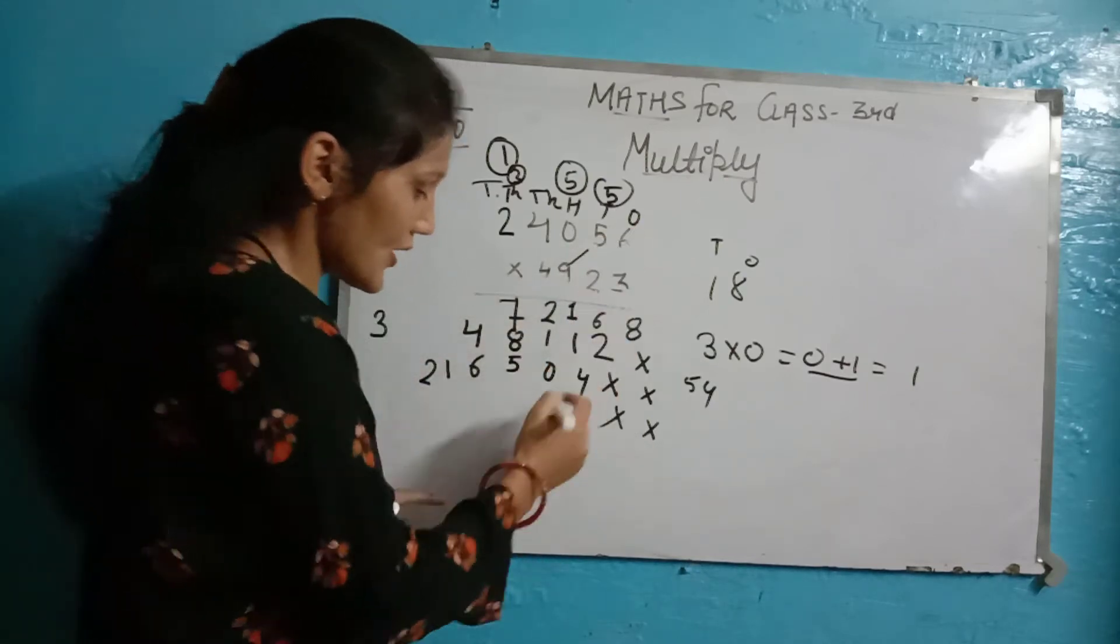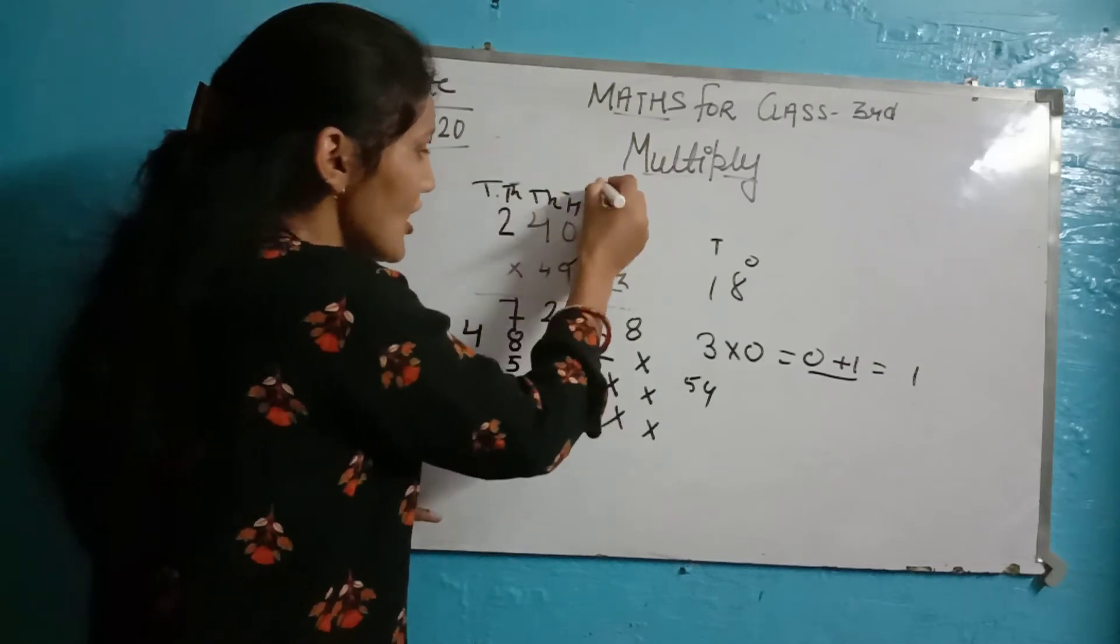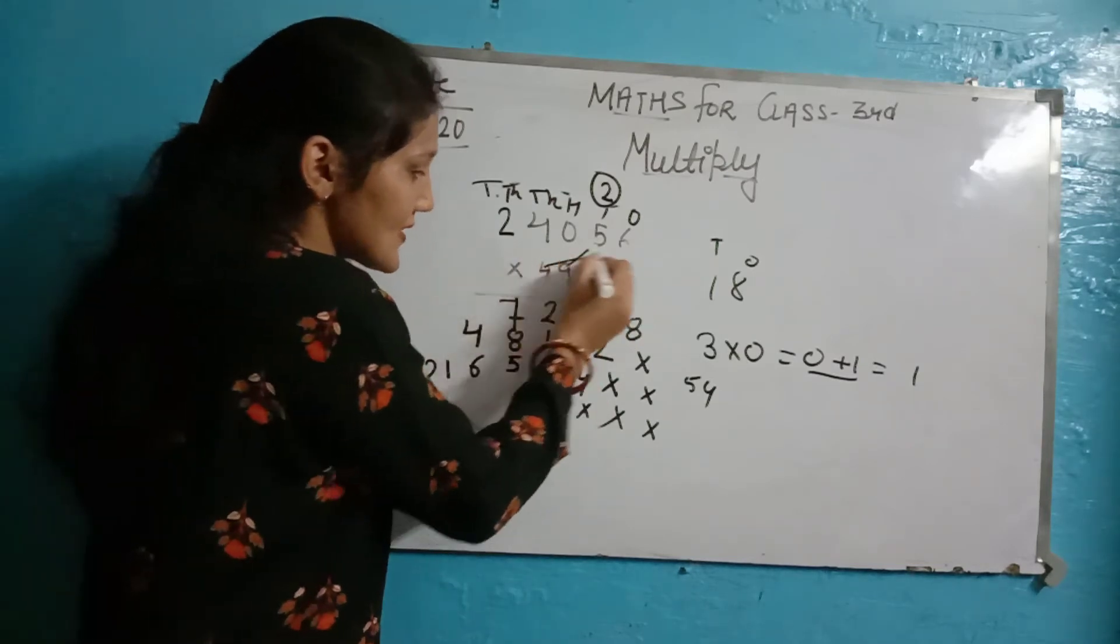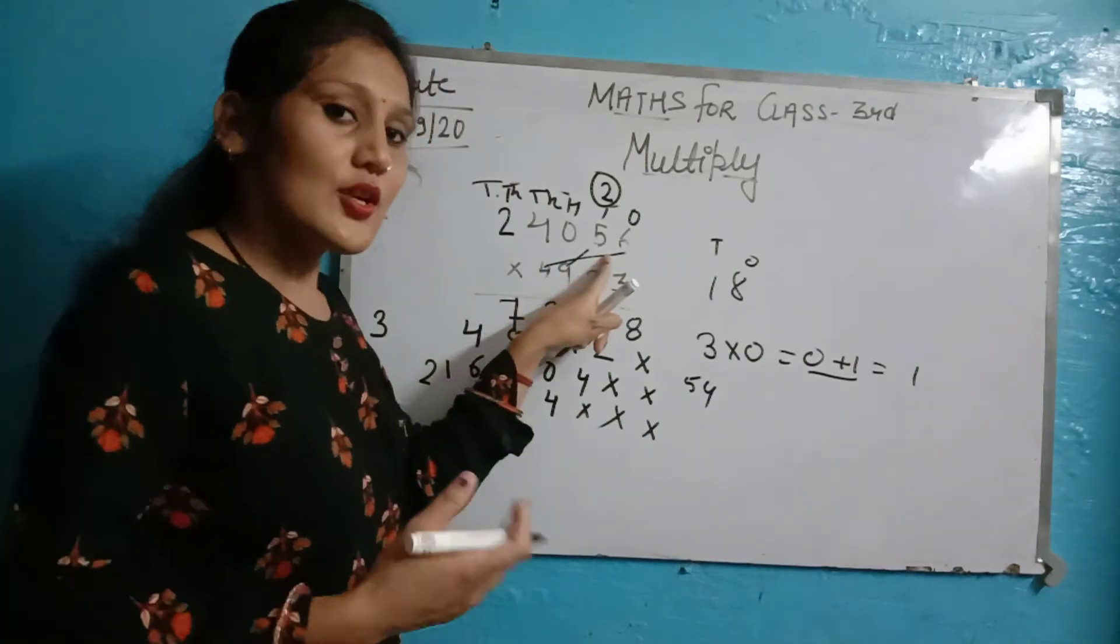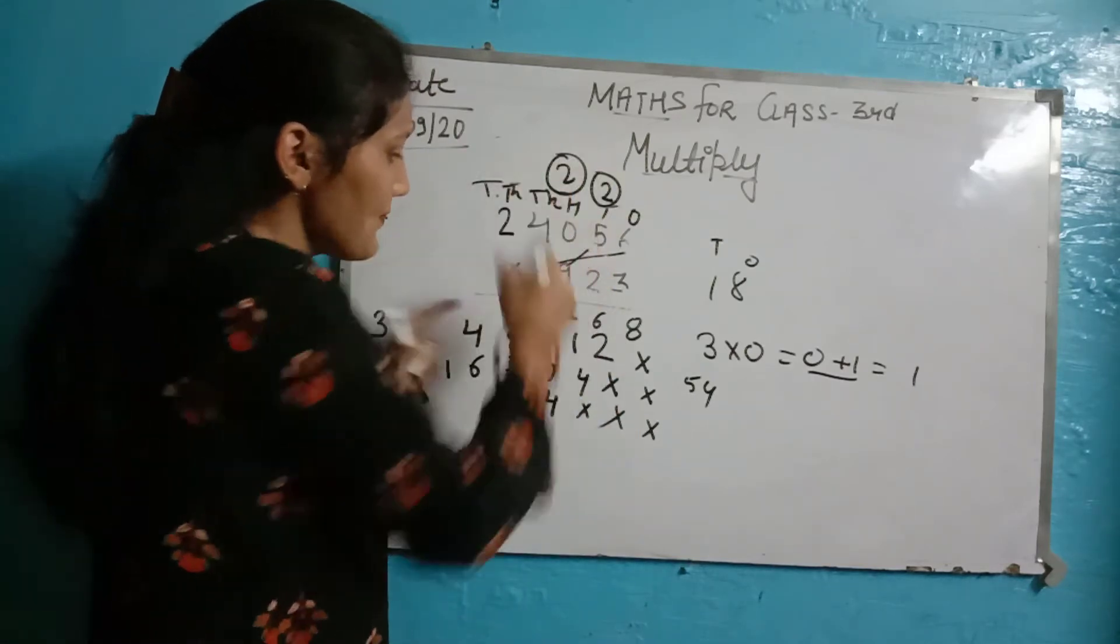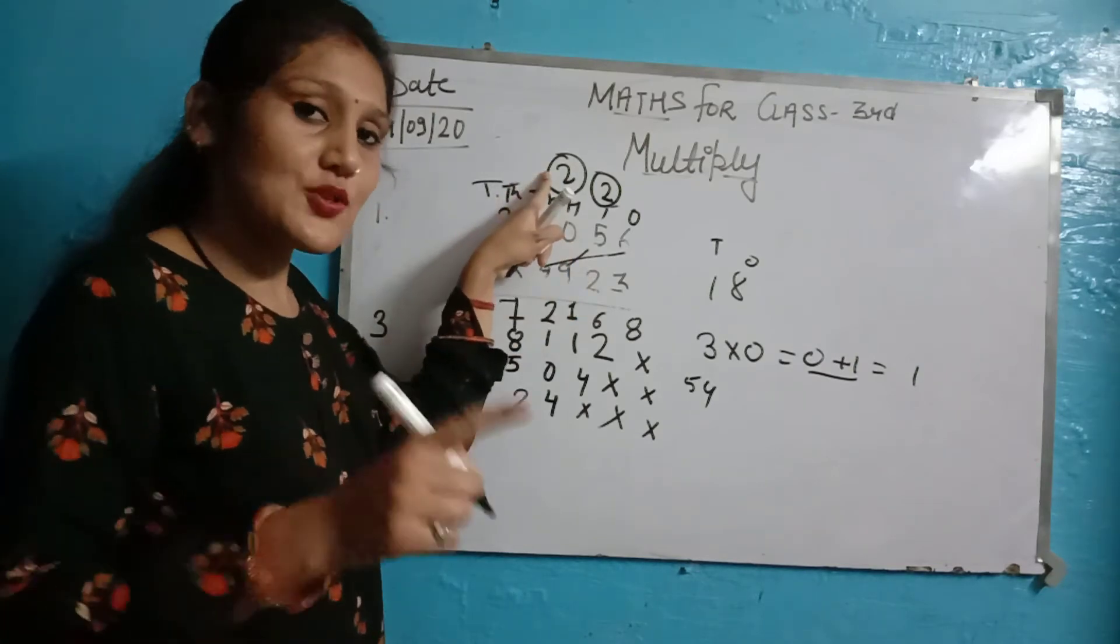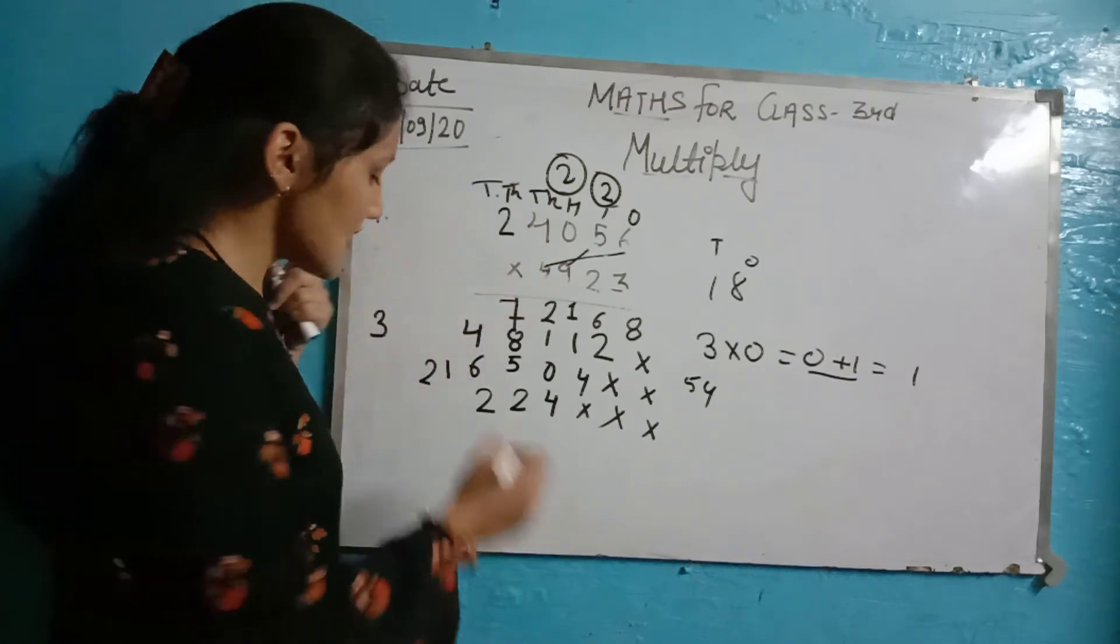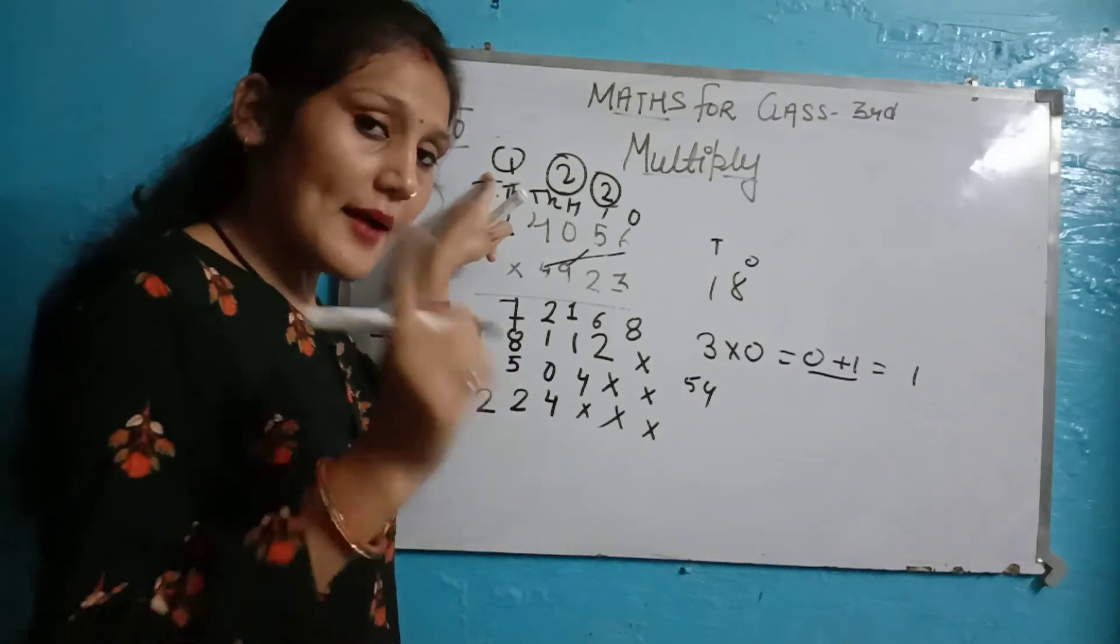Four times six, 24, 2 carry. We are writing now so that you don't forget it and you will not add the carry incorrectly. Four times five, 20, plus 2 carry equals 22, 2 carry. Four times zero, 0, 0 plus 2 equals 2. Four times four, 16, 1 carry. Four times two equals 8, plus 1 carry equals 9.